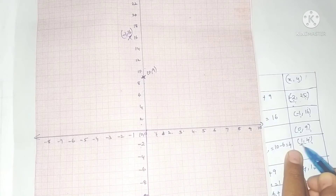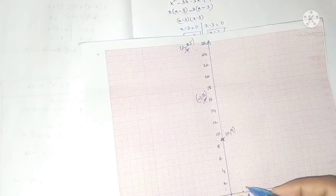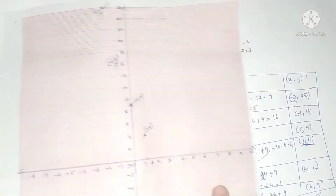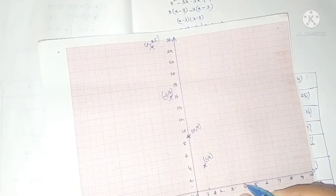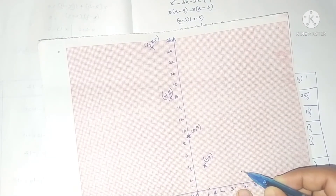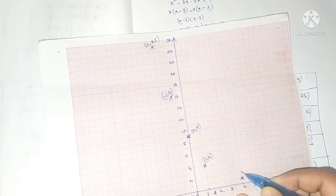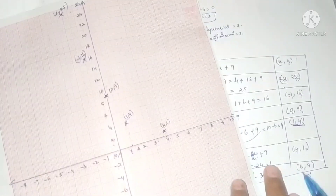Continuing to plot: (0, 9), then (1, 4) — x is 1 and y is 4. Then (4, 1) — x is 4 and y is 1. All five points are now plotted on the graph.